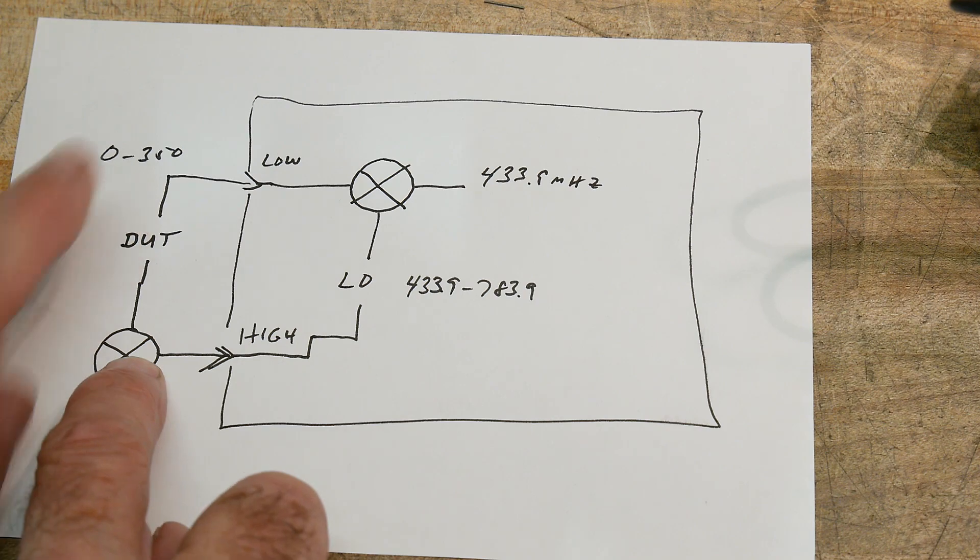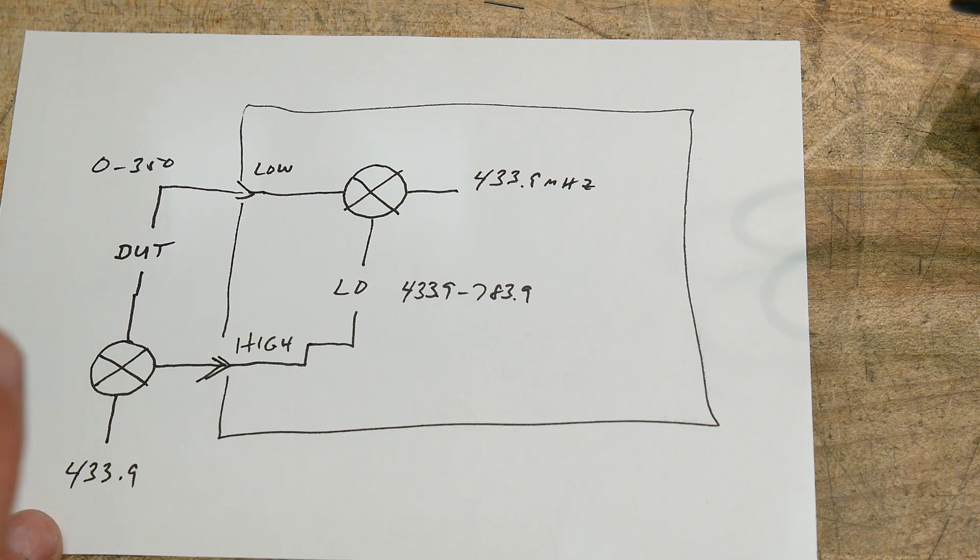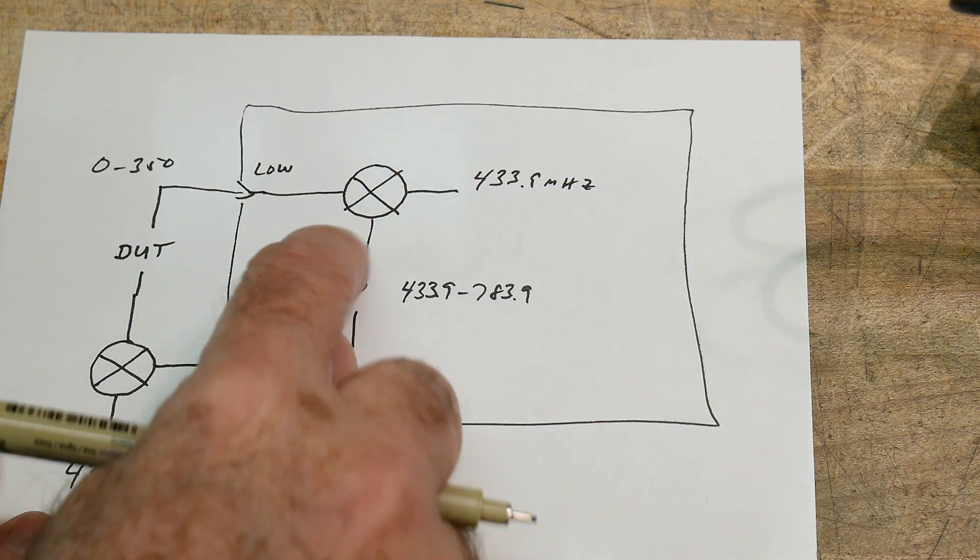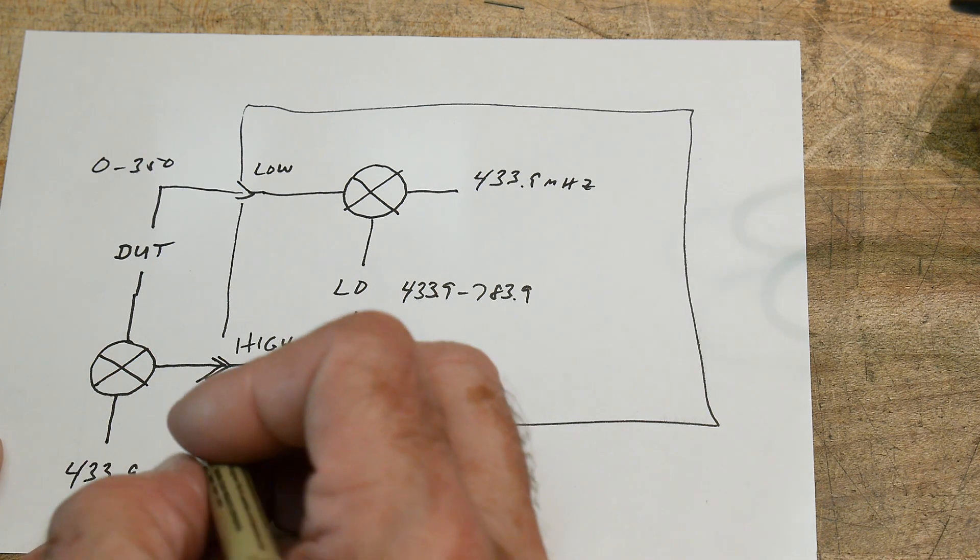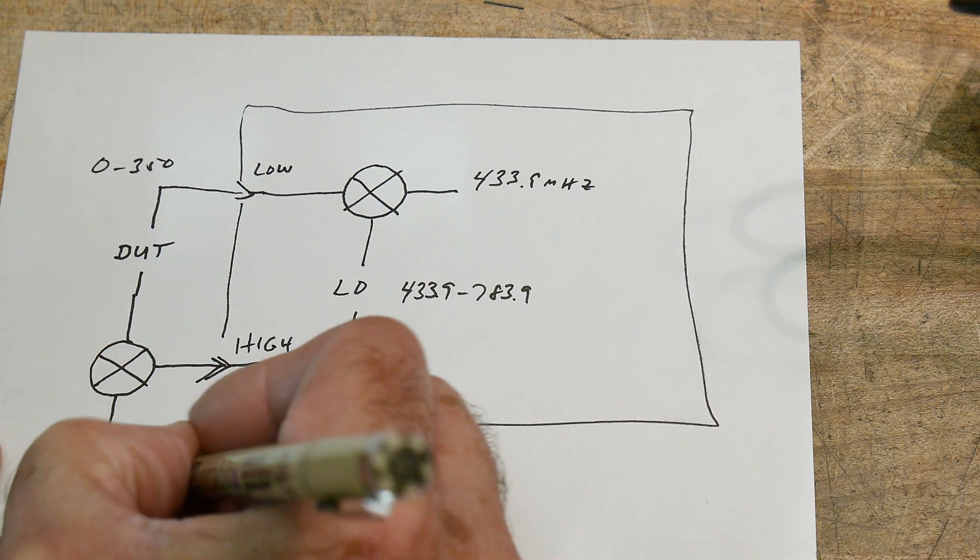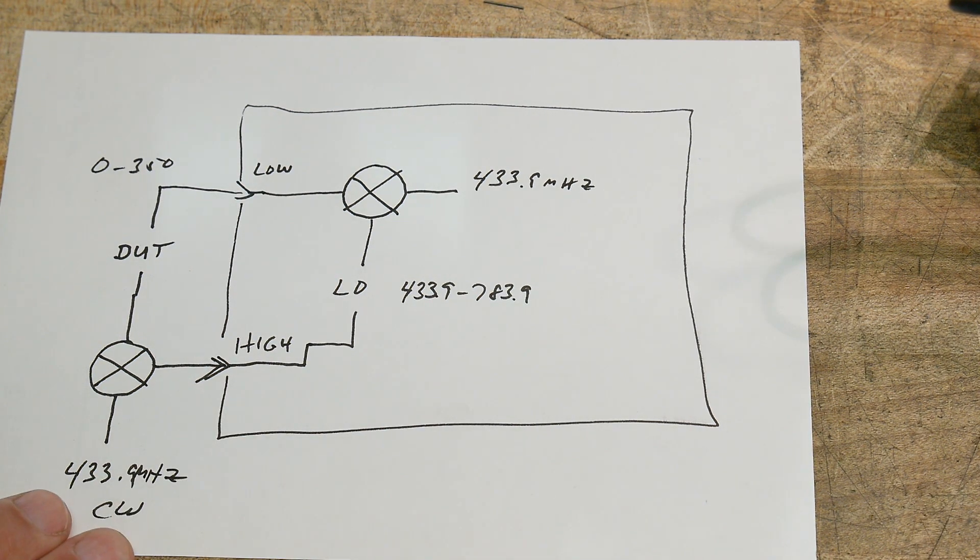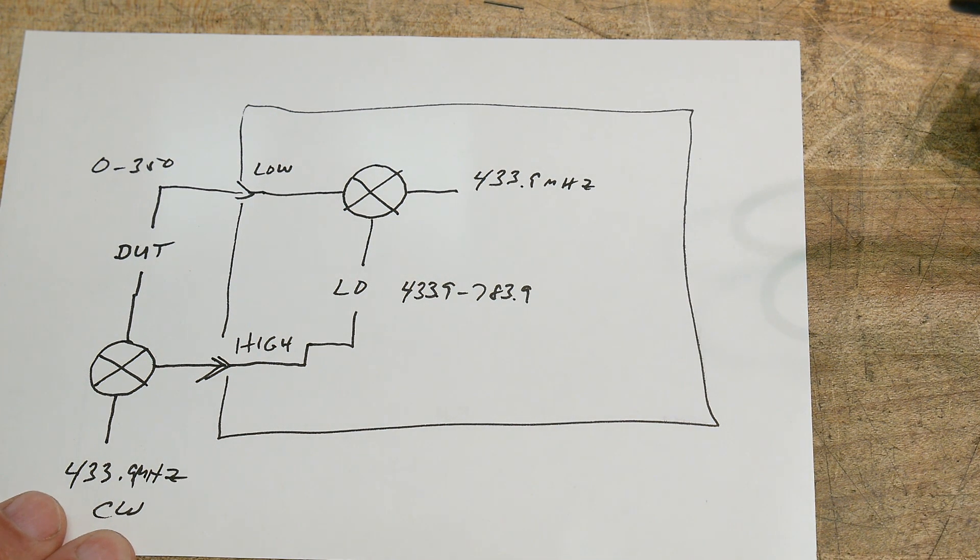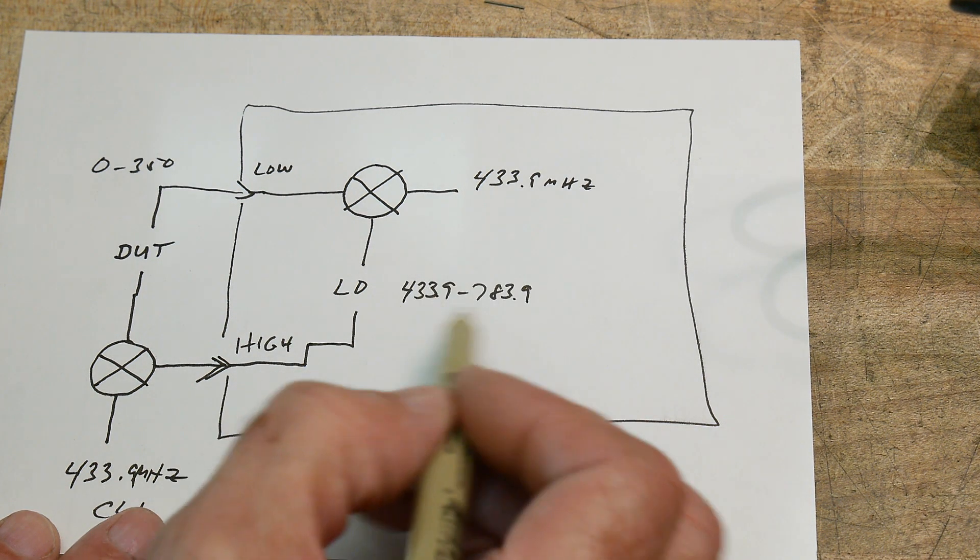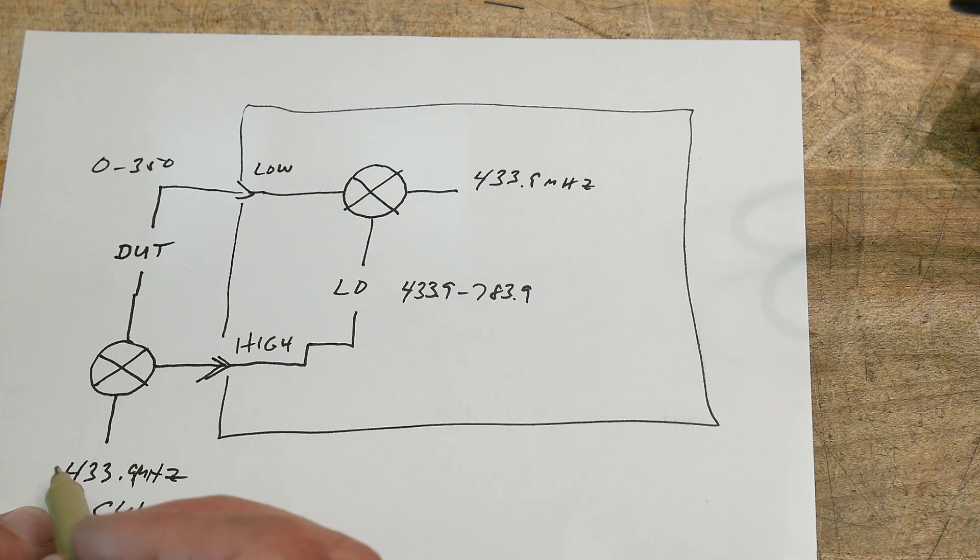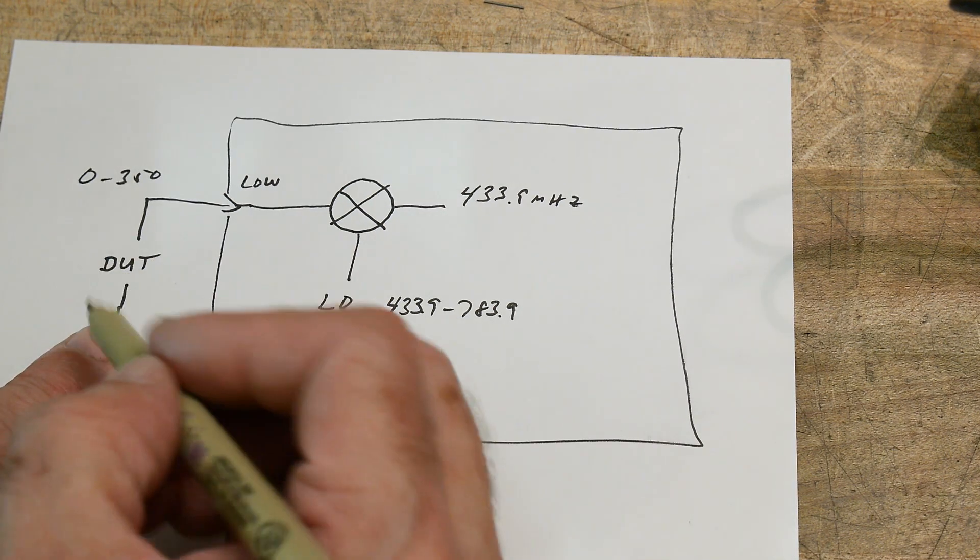Well, if we put that into a mixer, so if we set the LO output, and I'll show you how to do that. The LO comes out the high connector. If we mix that with a 433.9 constant fixed frequency, then we can take these frequencies and subtract them from this fixed 433.9. And the output will be a number between 0 and 350.